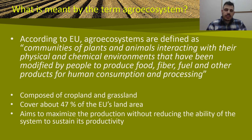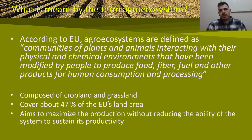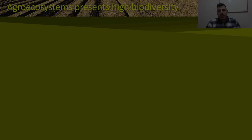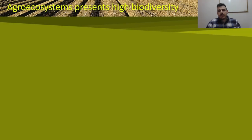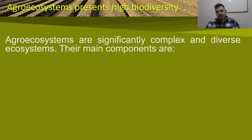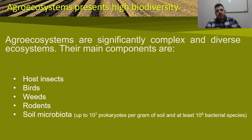What is considered to be an agro-ecosystem is a system which aims to maximize production without causing reduction of the sustainability of it. Agro-ecosystems are complex and diverse ecosystems composed by some major groups of biotic organisms. The main ones are host insects, weeds, rodents, birds and soil microbiota.